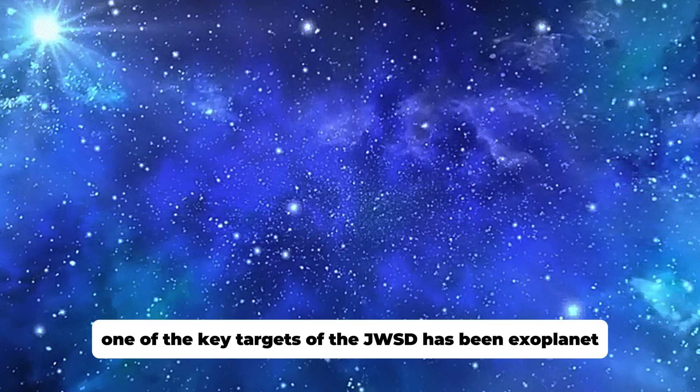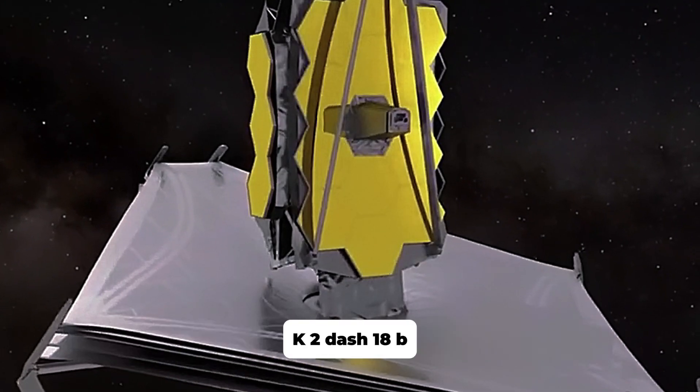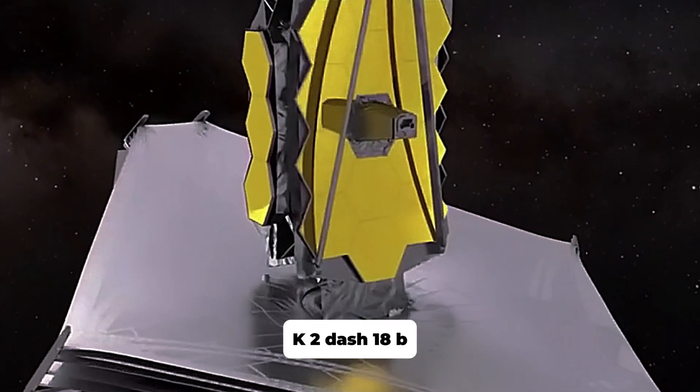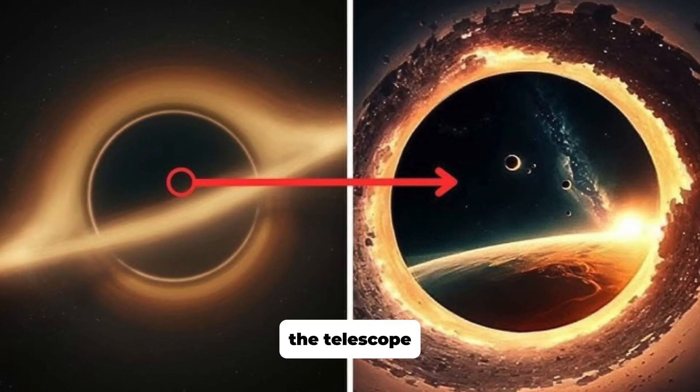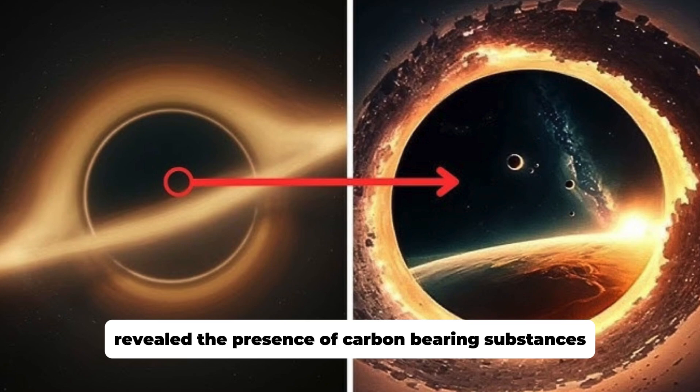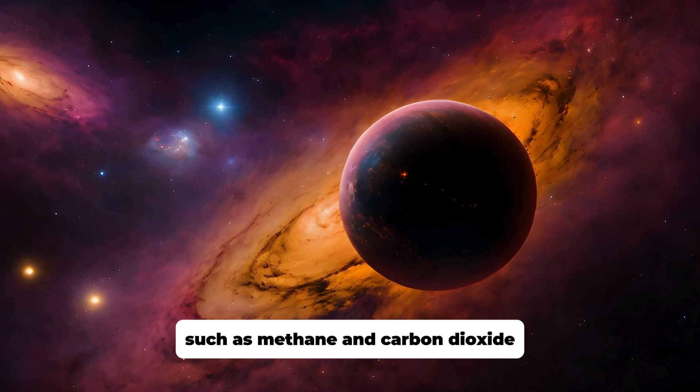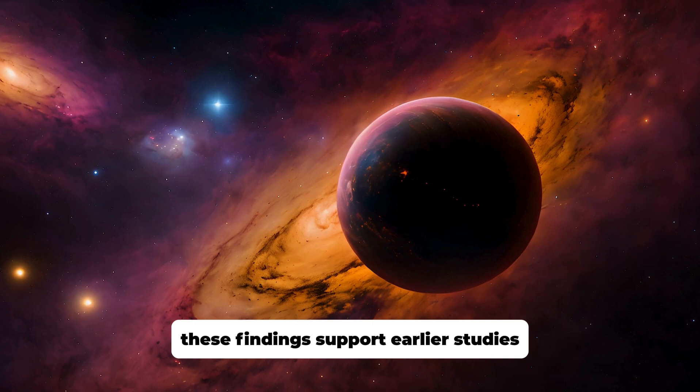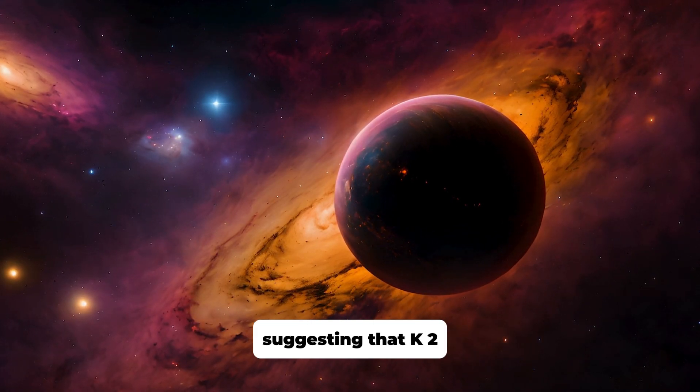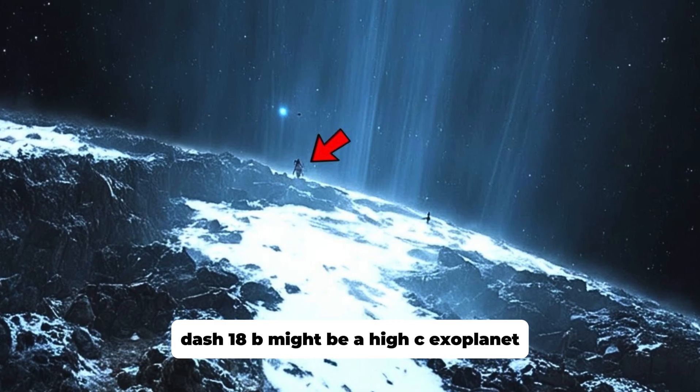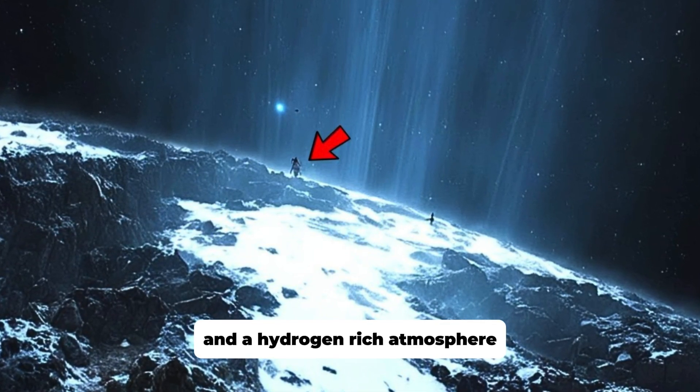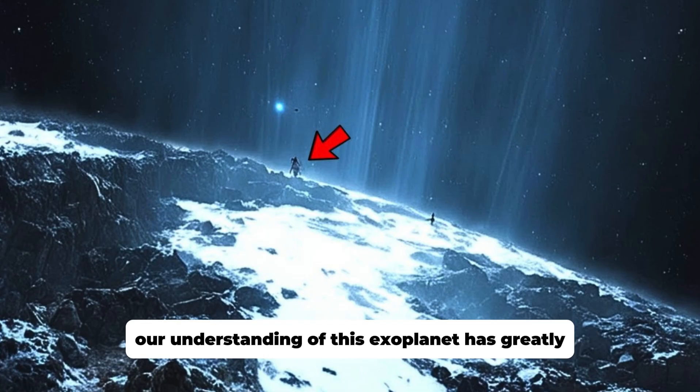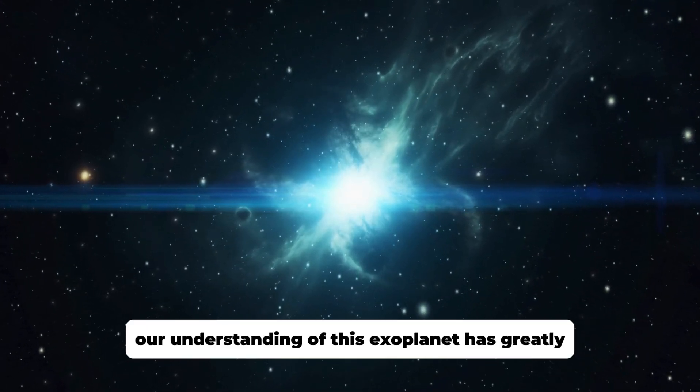One of the key targets of the JWST has been exoplanet K2-18b, which is 8.6 times the mass of Earth. The telescope revealed the presence of carbon-bearing substances such as methane and carbon dioxide. These findings support earlier studies suggesting that K2-18b might be a Hycean exoplanet, with a water-covered surface and a hydrogen-rich atmosphere.